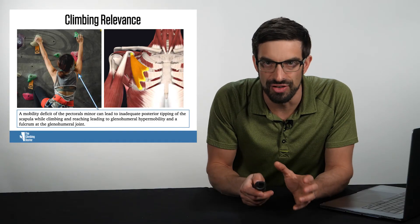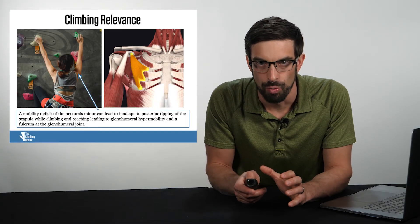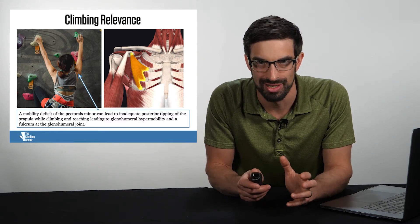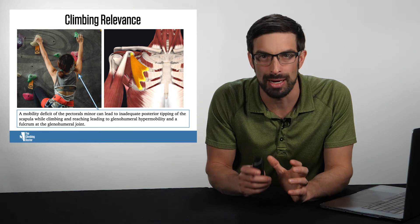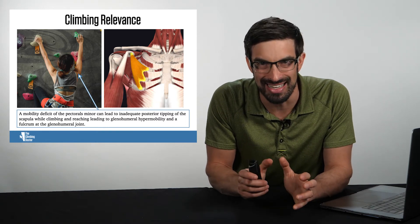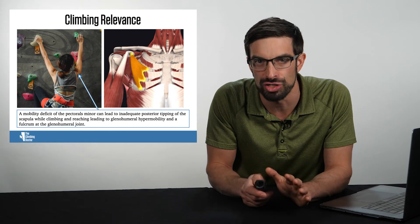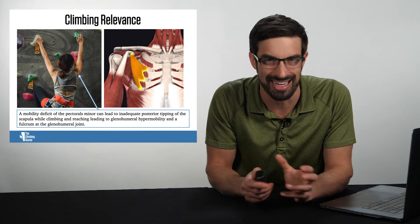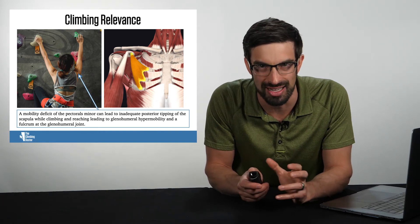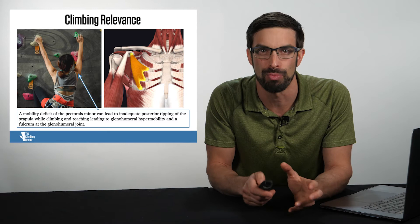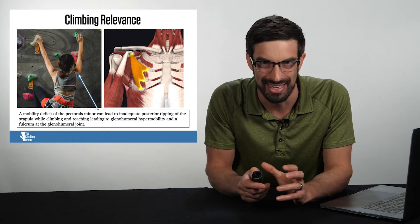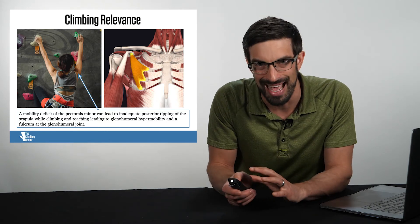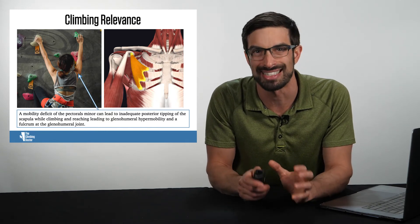This is oftentimes easy to visualize in the clinic with having a climber stand in front of you and go into bilateral shoulder flexion. If you notice inadequate posterior tipping of the scapula and you see excessive fulcruming in the posterior aspect of the humerus, you then will need to follow that up with some type of laxity test, a load and shift test or something to assess if there is excessive hypermobility of the glenohumeral joint. Then the climber should be put on a pectoralis minor mobility program as well as a glenohumeral joint stability program.